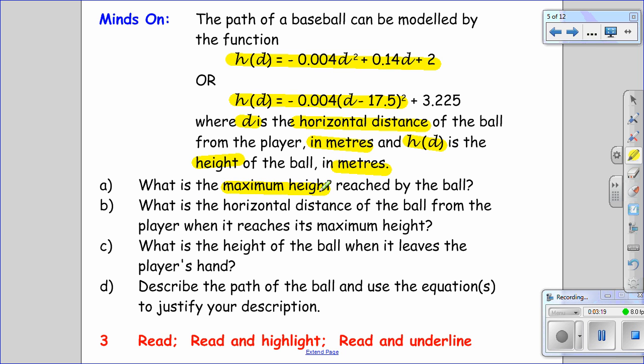Part A wants maximum height, that's important. B wants the horizontal distance when it reaches its maximum height. I'm not very good at drawing a straight line, but that's okay. Part C wants the height of the ball when it leaves the player's hand. And Part D wants us to describe the path of the ball and to use the equation to justify our description.